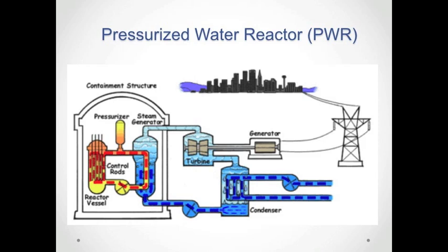A similar, although somewhat more sophisticated, type of reactor is illustrated here. This is the pressurized water reactor, or PWR. In this case, the reactor vessel heats water, but the water does not produce steam. Instead, it's kept under pressure. That hot water circulates through the steam generator on the right, inside the containment structure, producing steam. The advantage of this is that it runs at a higher temperature, therefore it's a little bit more efficient than the BWR.